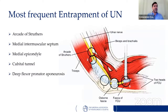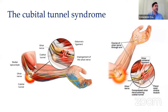The most frequent entrapment sites of the ulnar nerve are five: the arcade of Struthers (approximately 10 cm proximal to the medial epicondyle), the medial intermuscular septum, the medial epicondyle, the cubital tunnel (most frequent), and the deep flexor-pronator aponeurosis. Cubital tunnel syndrome results from compression of the ulnar nerve as it passes under the medial epicondyle on the medial elbow, where the nerve is relatively unprotected and can be trapped between bone and skin.